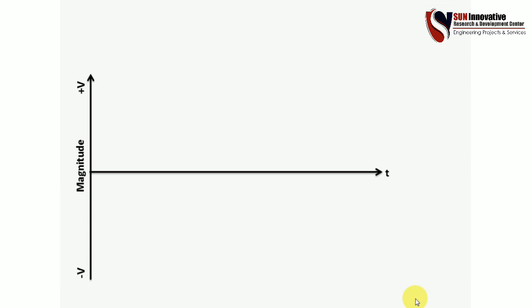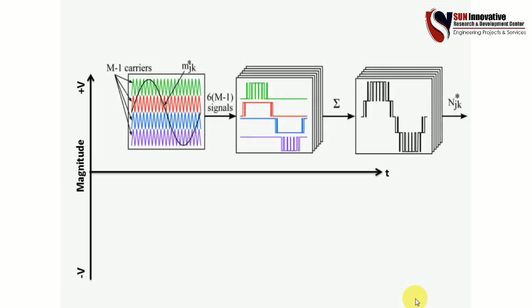Here is a block diagram of the PWM techniques, showing how multiple carriers are used to design PWM at different output levels of the inverter. When all the PWM-generated pulses are combined into one segment, it gives a sinusoidal PWM output voltage. This is the overall technique we will discuss in this video.